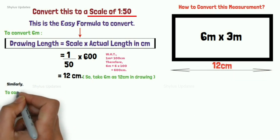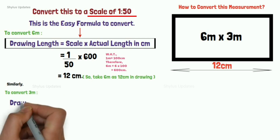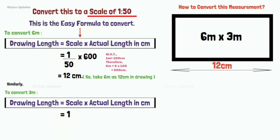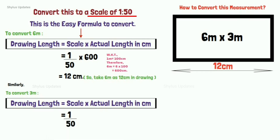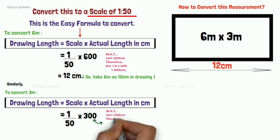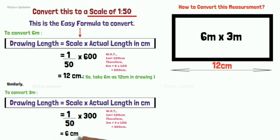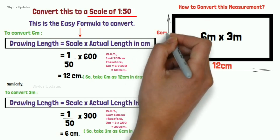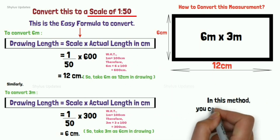Similarly, to convert 3 meters with scale 1 to 50, use the same formula. Write: (1/50) × actual length in centimeters. Actual length is 3 meters = 300 centimeters. Doing the calculation: (1/50) × 300 = 6 cm. So take 3 meters as 6 centimeters in the drawing. In this method, you can convert easily.